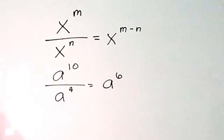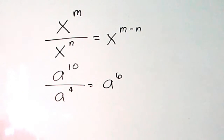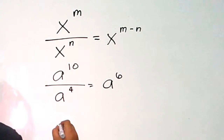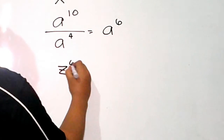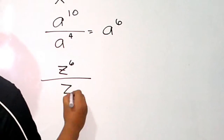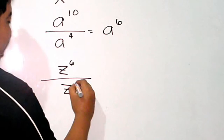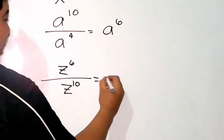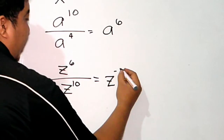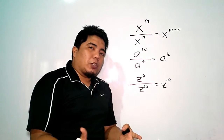Now, what if we have a smaller value in the numerator and a higher value in the denominator? Let's say we have z to the power of 6 over z to the power of 10. As you can see, that gives us z to the power of negative 4.